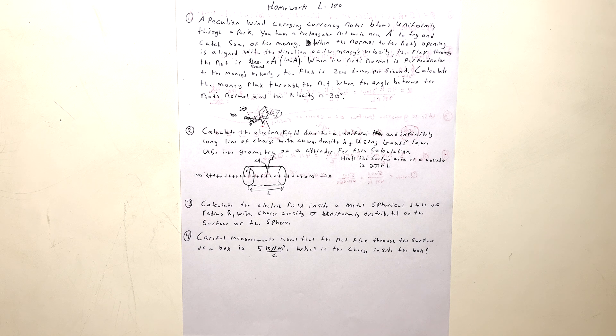You have a rectangular net with area A to try and catch some of the money. When the normal to the net's opening is aligned with the direction of the money's velocity, the flux to the net is $100 per second times A, or 100A. When the net's normal is perpendicular to the moving velocity, the flux is $0 per second. Calculate the money flux through the net when the angle between the net's normal and the velocity is 30 degrees.